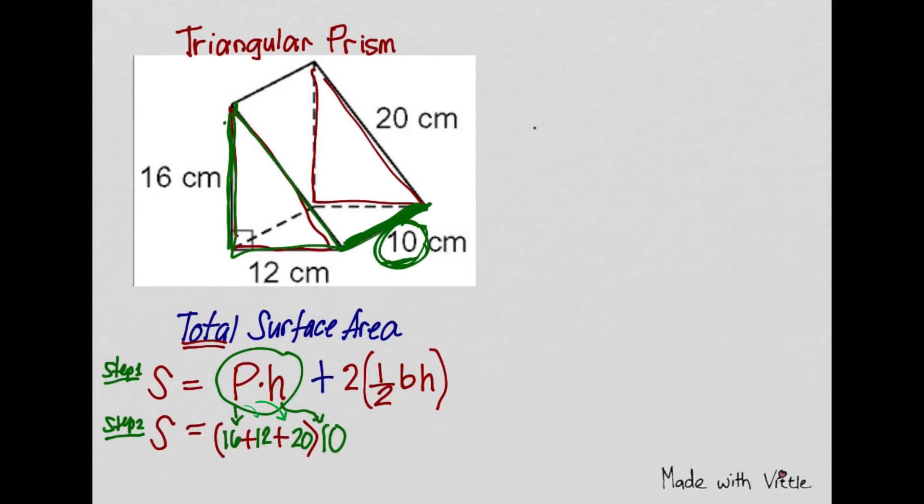Now let's add the two areas of the bases, which are the two triangles. So for one triangle, the area will be one half times base times height, then times two because there's two of them.